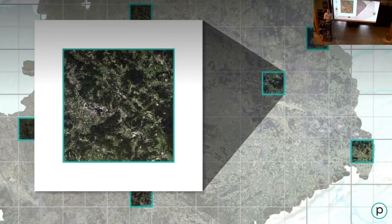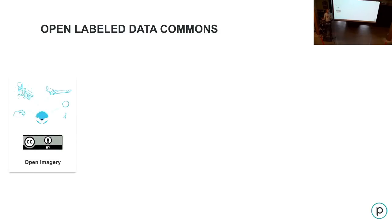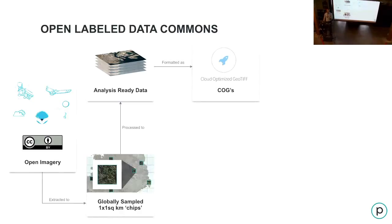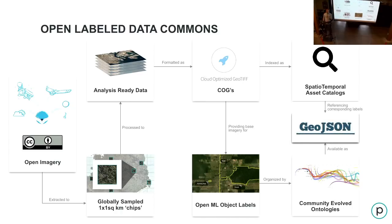The key is to get a representative global sample. We don't need to attempt to map everything — just a few key areas that are different from one another and really well labeled. Think about one kilometer by one kilometer chips that have stacks of data over time with a whole bunch of really good labels. This is all the pieces previously mentioned coming together to power computer vision and deep learning: open imagery sampled into chips, processed into analysis-ready data, available as COGs to stream and use, indexed in SpatioTemporal Asset Catalogs, and used as a basis for object labels. Ideally we have community-evolved ontologies to share the meaning of a road and define our own objects, exposed as GeoJSON and open formats. This should be open for all in a single well-understood license.